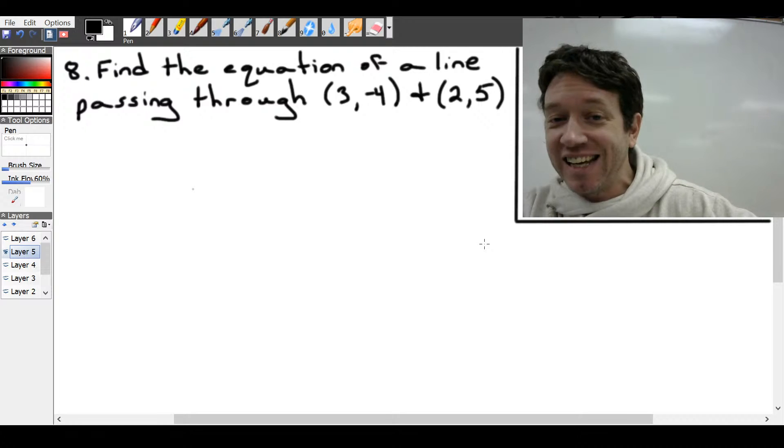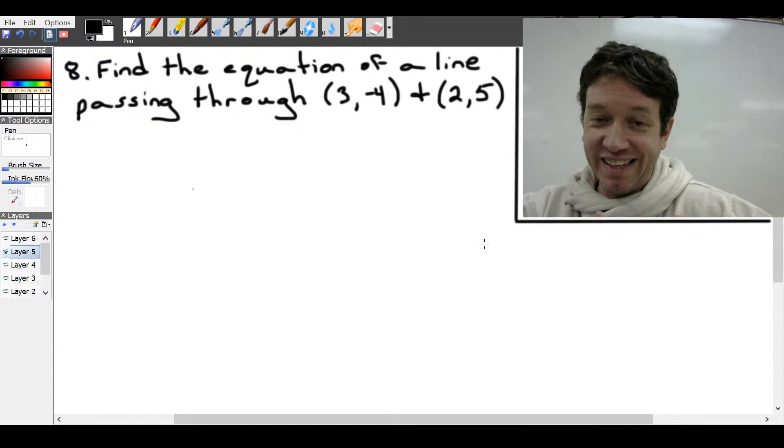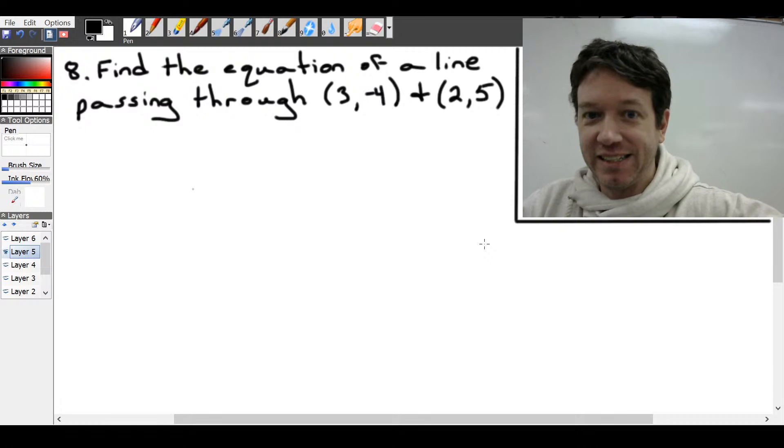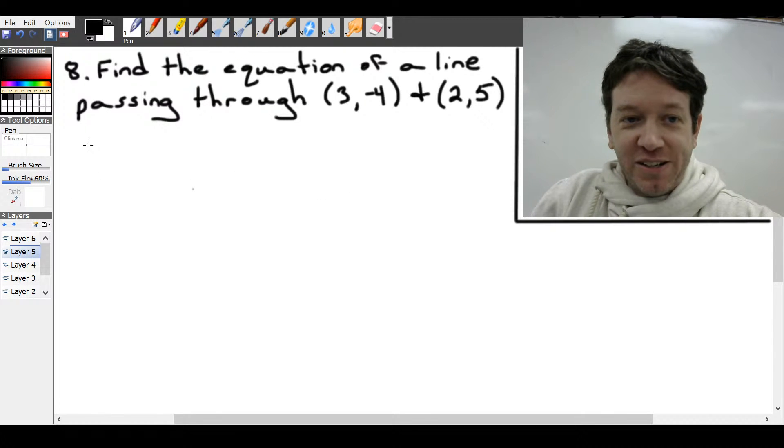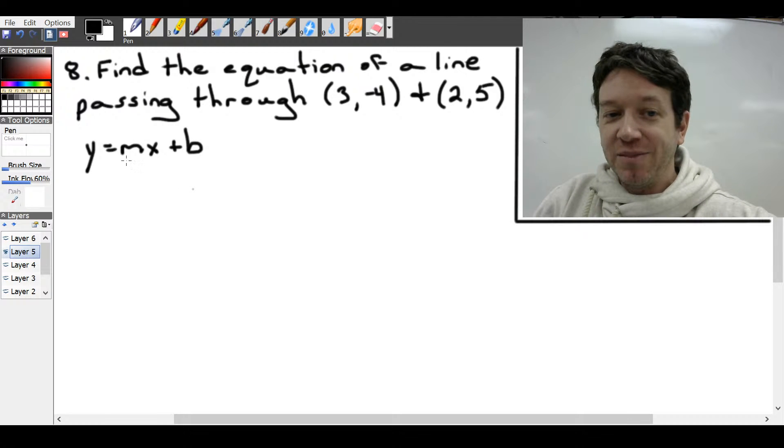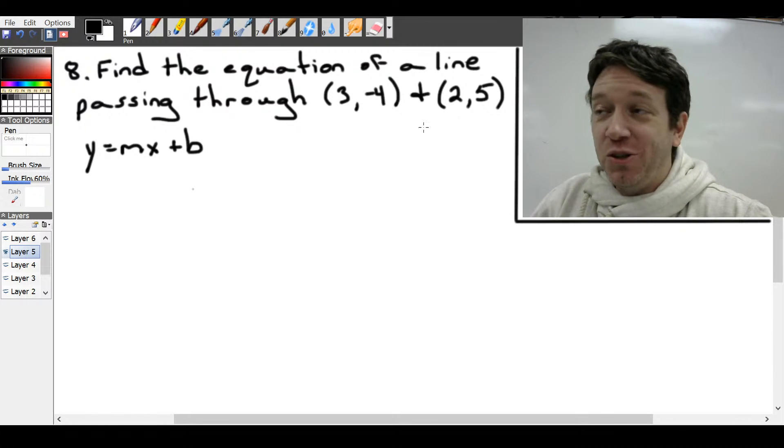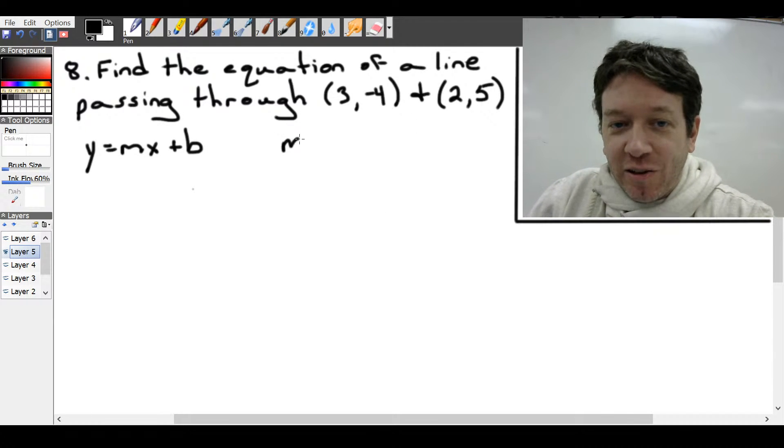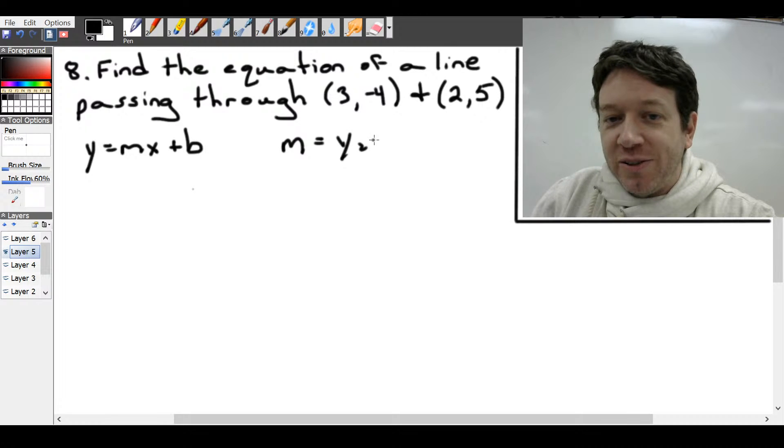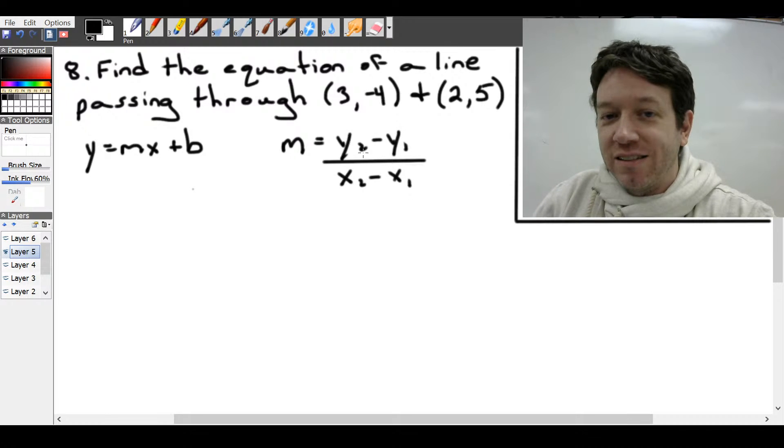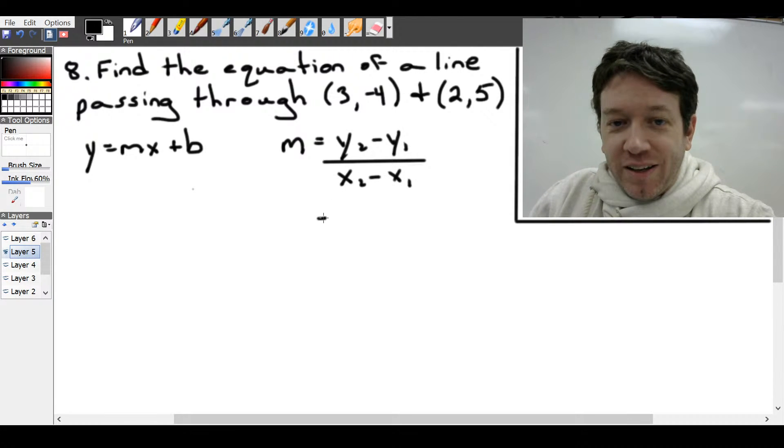All right. Now this example, again, we have a line. But instead of being given the equation, we need to determine the equation. So the equation we want is y equals mx plus b. So I need both the slope and the y-intercept. So to get the slope, we're given two points on the line. We can use this equation, which you learn in grade 9. Y2 minus y1 over x2 minus x1. So that's our rise, our up and down, our vertical components. And that is our run, our horizontals.